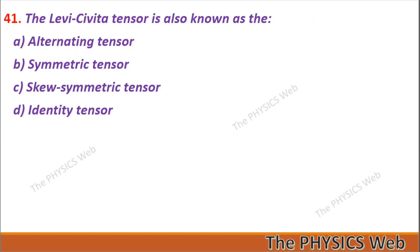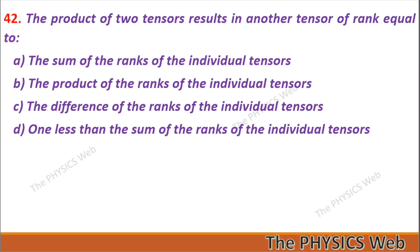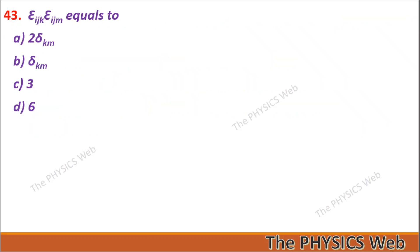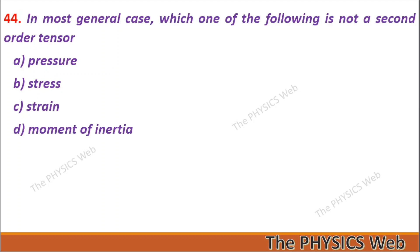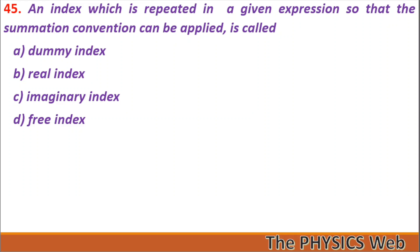Now I am leaving five questions for you — please answer them in the comment section. Question 41: The Levi-Civita tensor is also known as: alternating tensor, symmetric tensor, skew-symmetric tensor, or identity tensor? Question 42: The product of two tensors results in another tensor of rank equal to? Question 43: ε_ijk ε_ijm equals? Question 44: In the most general case, which of the following is not a second-order tensor? Question 45: An index which is repeated in a given expression so that the summation convention can be applied is called?